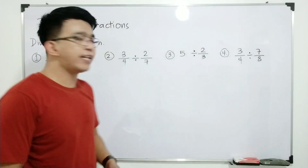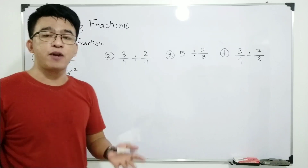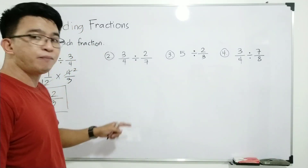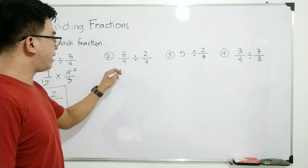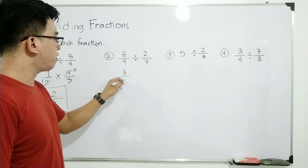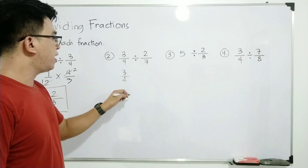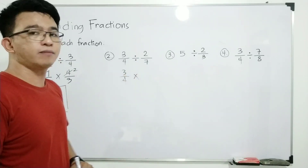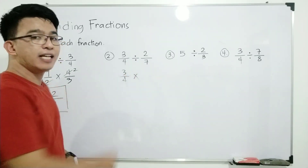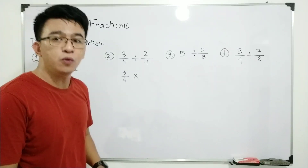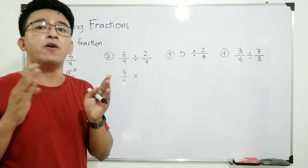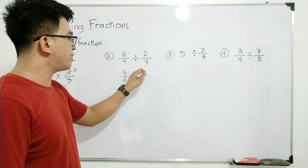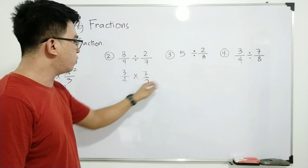Let's move on to item number two. For item number two, same process: three over four divided by two over seven. Copy the first fraction — we have three over four — then change the division sign to multiplication, and get the reciprocal of two over seven, which is seven over two.